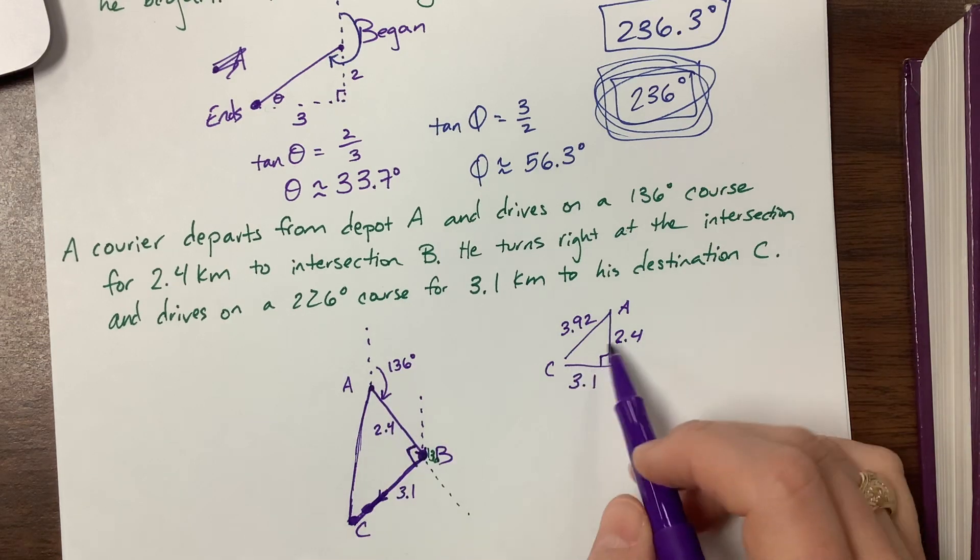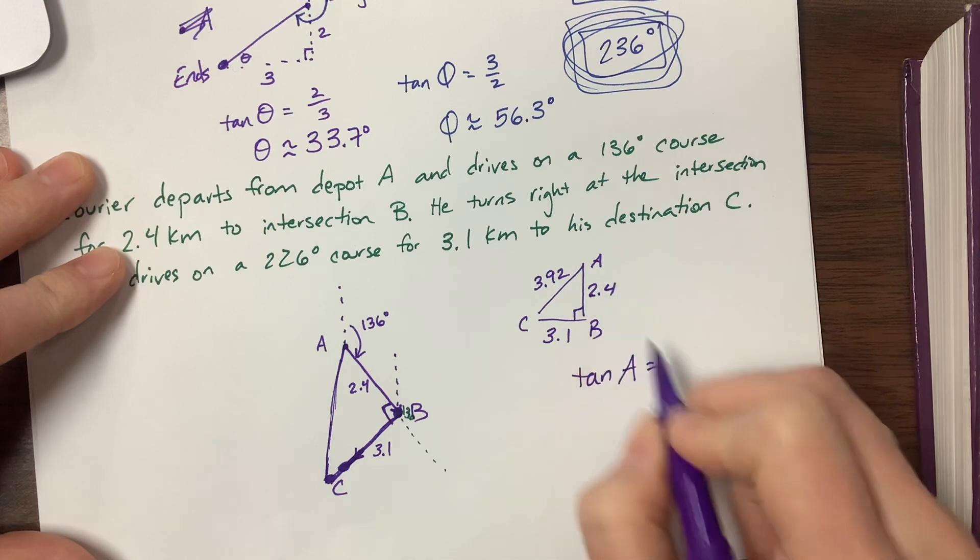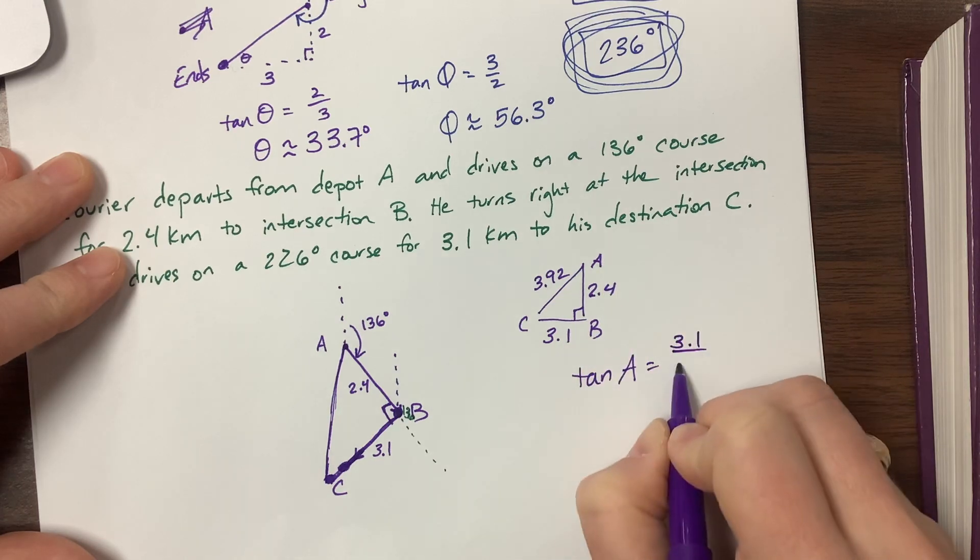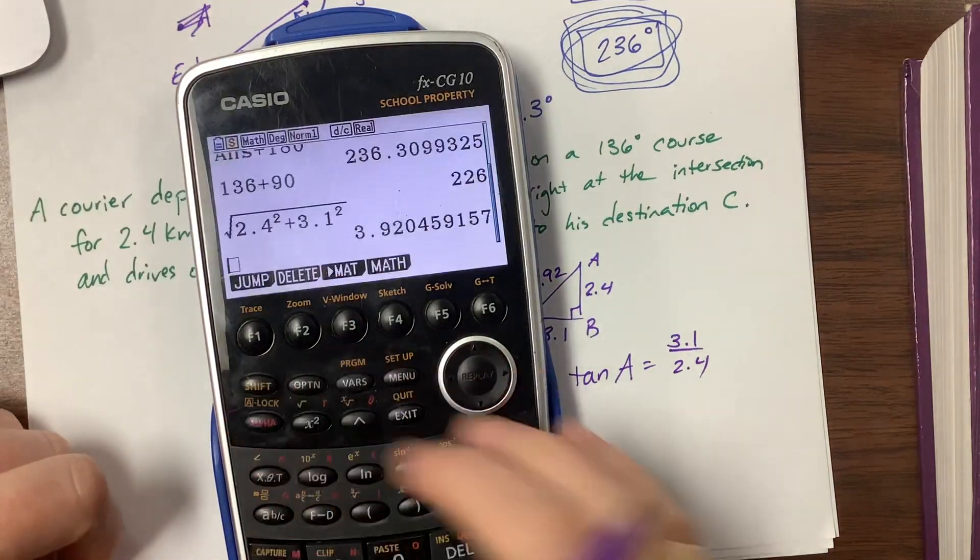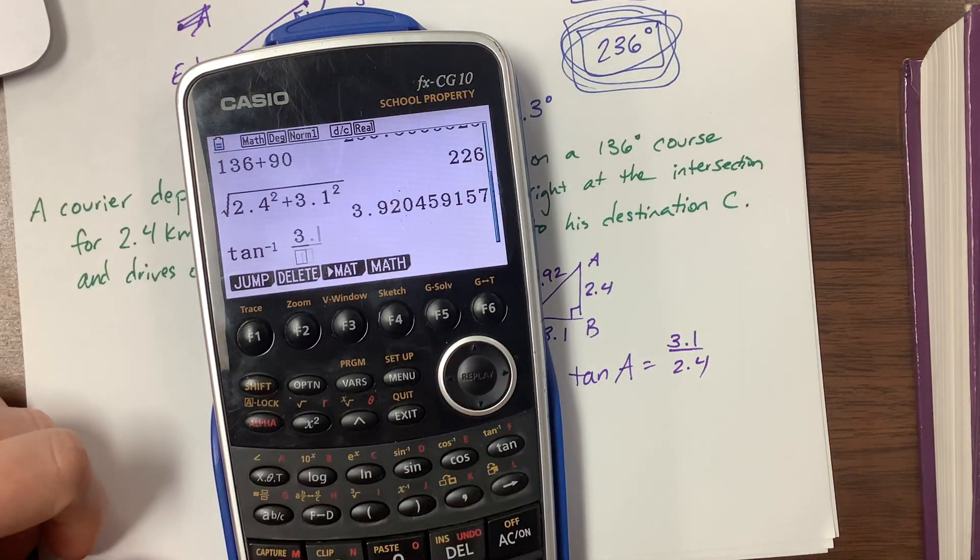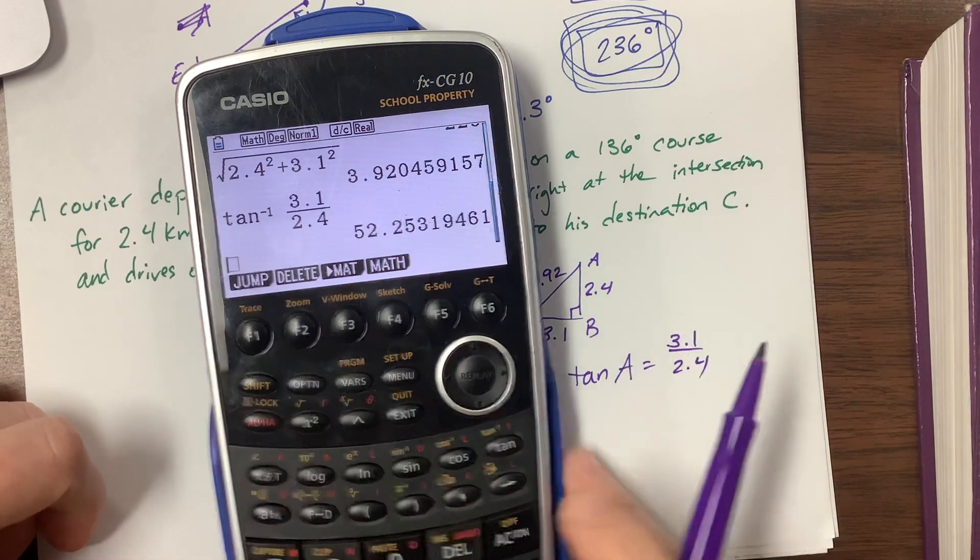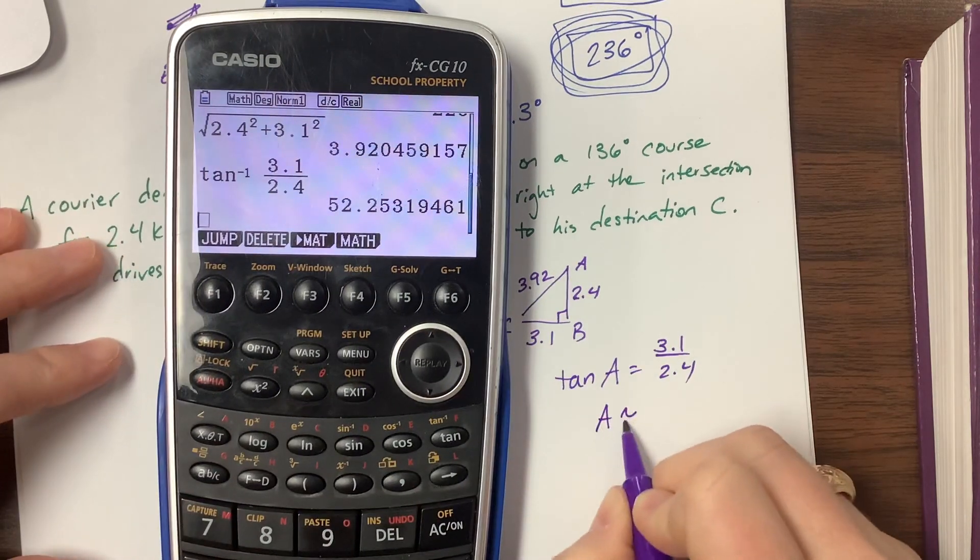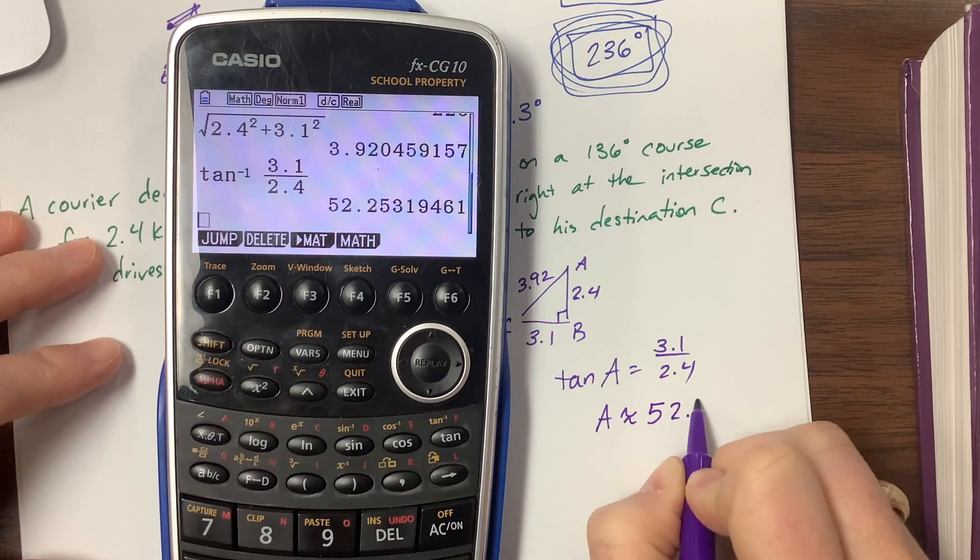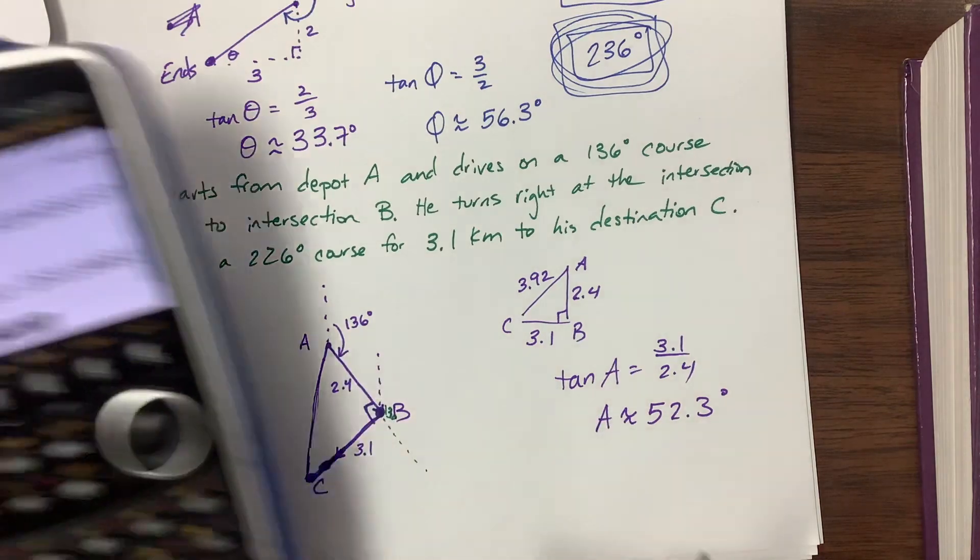So I can say, let's use these - tangent of A is equal to opposite over adjacent. So second tangent, 3.1 over 2.4. And notice I use the numbers that they gave me in case I messed up here. I don't want to compound my mistake. So A is approximately 52.3 degrees, three sig figs. And so we need to add that to this 136.